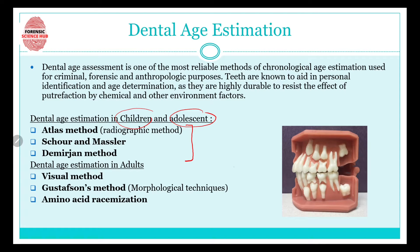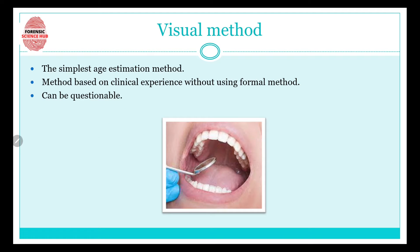In today's video I'll be discussing three methods: visual, Gustafson, and amino acid racemization. I've already made a separate video for Gustafson since it is quite a large method, so that video's link is given in the description box. Now let's talk about the other two methods, starting with the simplest one — the visual method.